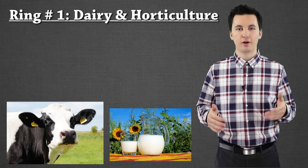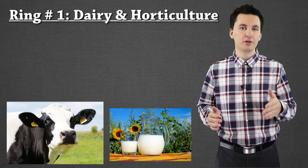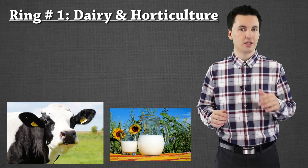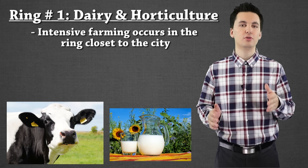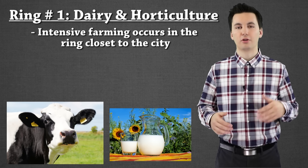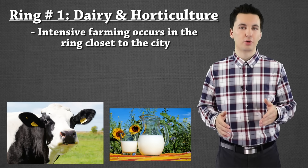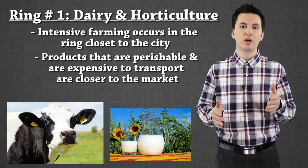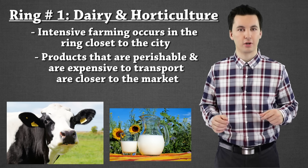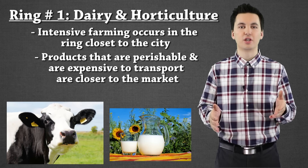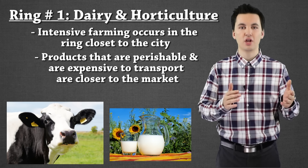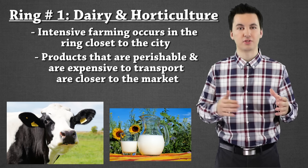Right outside of our city is dairy and horticulture. The reason why it's here is because of the intensity of production. Von Thunen postulated that the more intense a production is, the closer it will have to be to the city — it will require more labor, more time, and a lot of these products will also be more perishable. This is also going to be known as a milk shed — the range within which you can produce milk or other perishable things before they expire, essentially the range to get to your consumers.